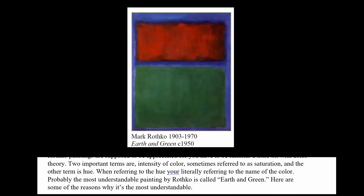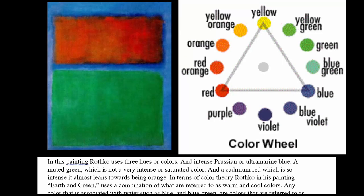The most understandable painting in terms of this is called Earth and Green. He uses three hues: a Prussian blue — or possibly ultramarine — at its purest intensity, a muted green that has some white in it, making it almost pastel and grayed out, so it's not a very intense or saturated color, and then a Cadmium red that almost leans toward orange and sort of leaps out at you.